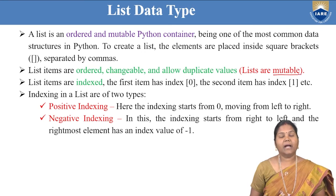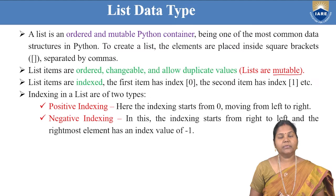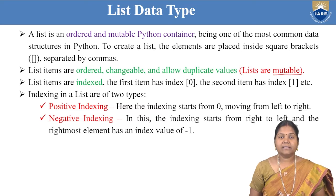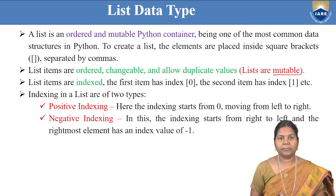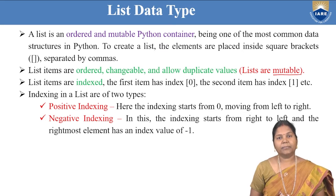Mutable and immutable — there are two types of objects. Mutable means which are modifiable; immutable means which are not modifiable. Tuple is immutable whereas lists are mutable. List items are indexed from left to right starting from 0, 1, 2 and so on, and from right to left with negative indexing: minus 1, minus 2, minus 3 and so on. Both positive and negative indexing can be applied.